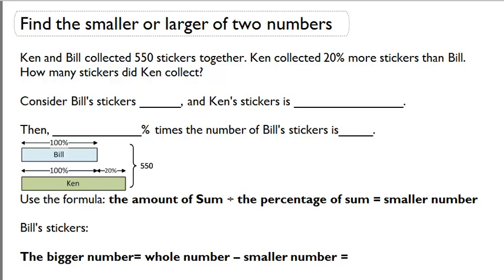So in this situation Ken and Bill combine to have 550 stickers. We also know that Ken collected more, and we know that he collected 20% more. Based on this information, let's calculate how many stickers that Ken collected.